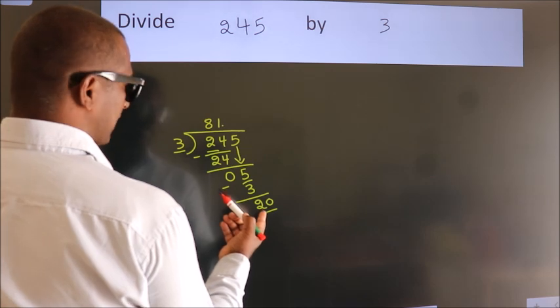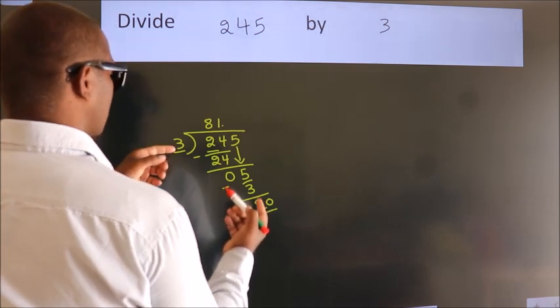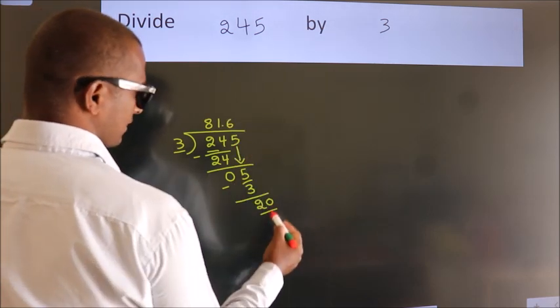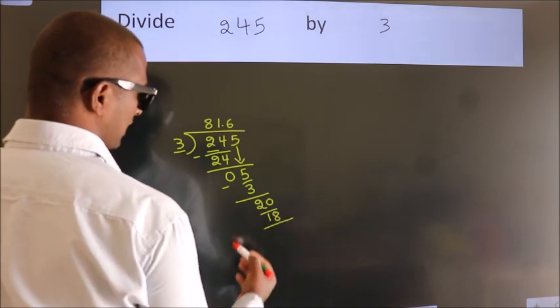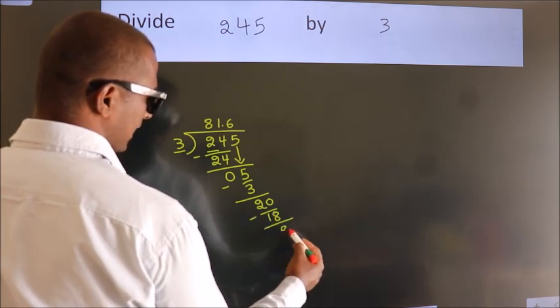A number close to 20 in the 3 table is 3 times 6, which is 18. Now we subtract. We get 2.